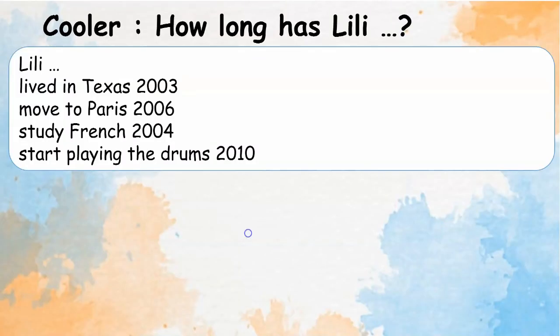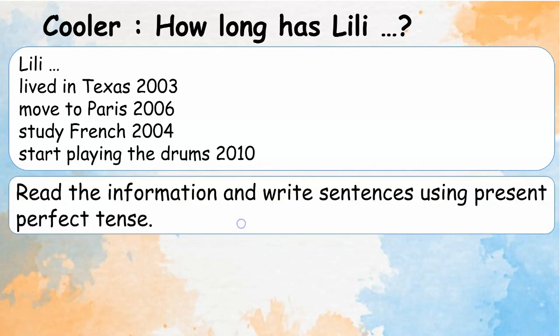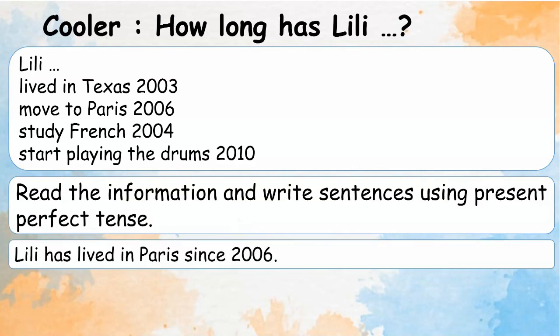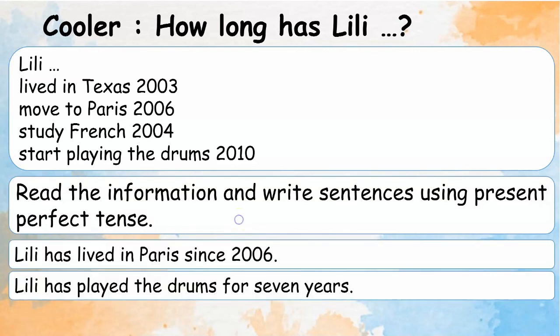Cooler. How long has Lily...? Lily lived in Texas — 2003. Moved to Paris — 2006. Study French — 2004. Start playing the drums — 2010. Read the information and write sentences using present perfect tense. For example: Lily has lived in Paris since 2006. Lily has played the drums for 7 years.